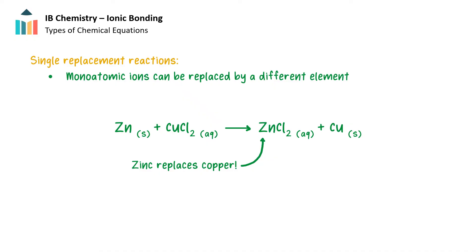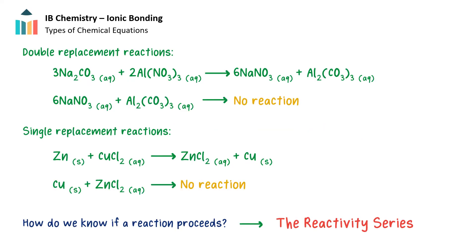In single replacement or substitution reactions, monoatomic ions found in various ionic compounds can be replaced by a different element as a reactant in its elemental form. Just like the double replacement reactions, sometimes these reactant pairings generate a chemical reaction, but sometimes not. The reactivity series lists the elements from the most reactive to the least reactive and is used when determining if a single replacement reaction proceeds.